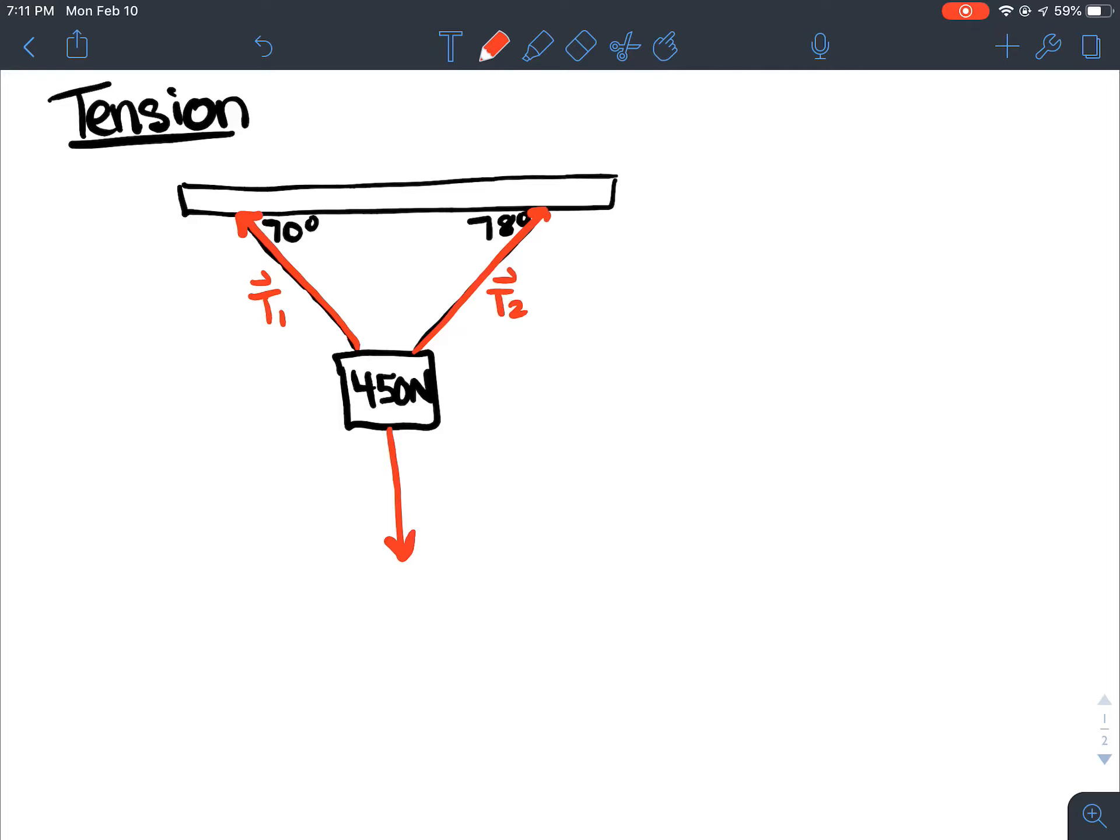Okay, so to solve this question, you can use like the cosine law way of adding vectors, or you can split it into components. So I'm going to show each one. So if you want to use the head-to-tail method, so let's just say we're just going to add up.